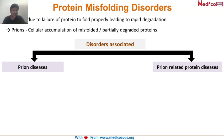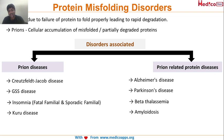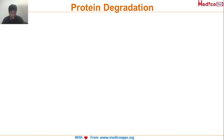A past exam question asked which of the following is a protein misfolding disease. Creutzfeldt-Jakob disease is a protein misfolding disease, as is GSS, fatal familial insomnia (both familial and sporadic forms), and Kuru disease. Prion-related diseases include Alzheimer's, Parkinson's, beta-thalassemia, and amyloidosis. Misfolded proteins undergo rapid degradation.